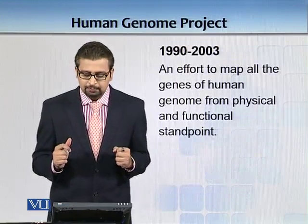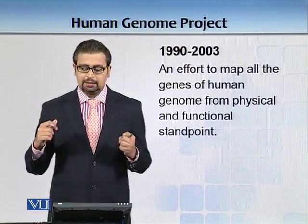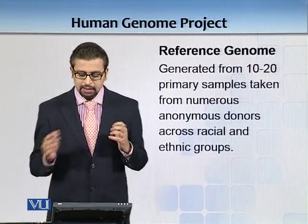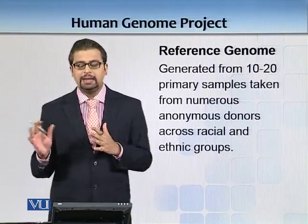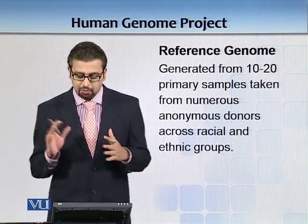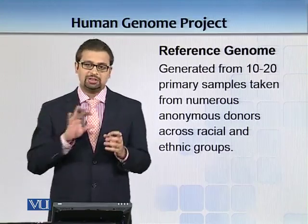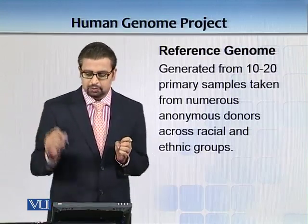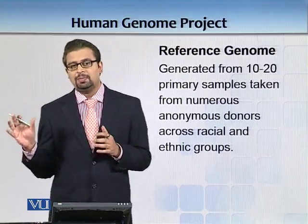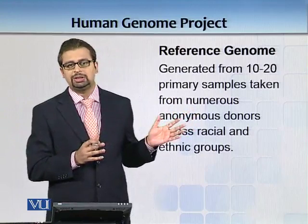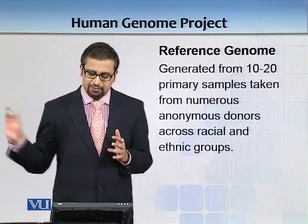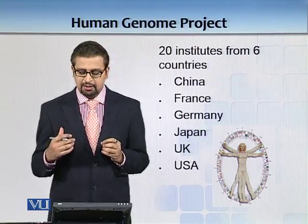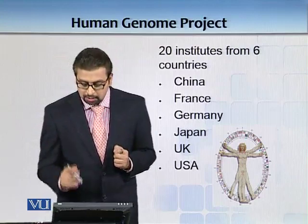In 1990 a huge consortium was formed, and its charter was to map all the genes of the human genome from a physical and functional standpoint. They took the reference genome from 10 to 20 anonymous donors across racial and ethnic groups. For example, a gene common in Japanese populations might not be seen in American populations. The sequencing was carried out by 20 institutes from six different countries — China, France, Germany, Japan, the UK, and the USA — with the USA and UK doing the major work.